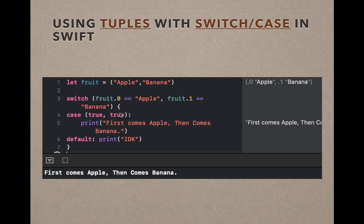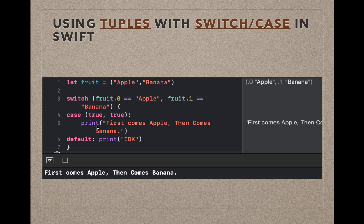This one uses a calculated case. fruit.zero accesses the first element of the tuple and fruit.one accesses the second. When the first equals apple and the second equals banana — both conditions true — it prints 'first comes apple, then comes banana'. In the output we get 'first comes apple and second comes banana'.